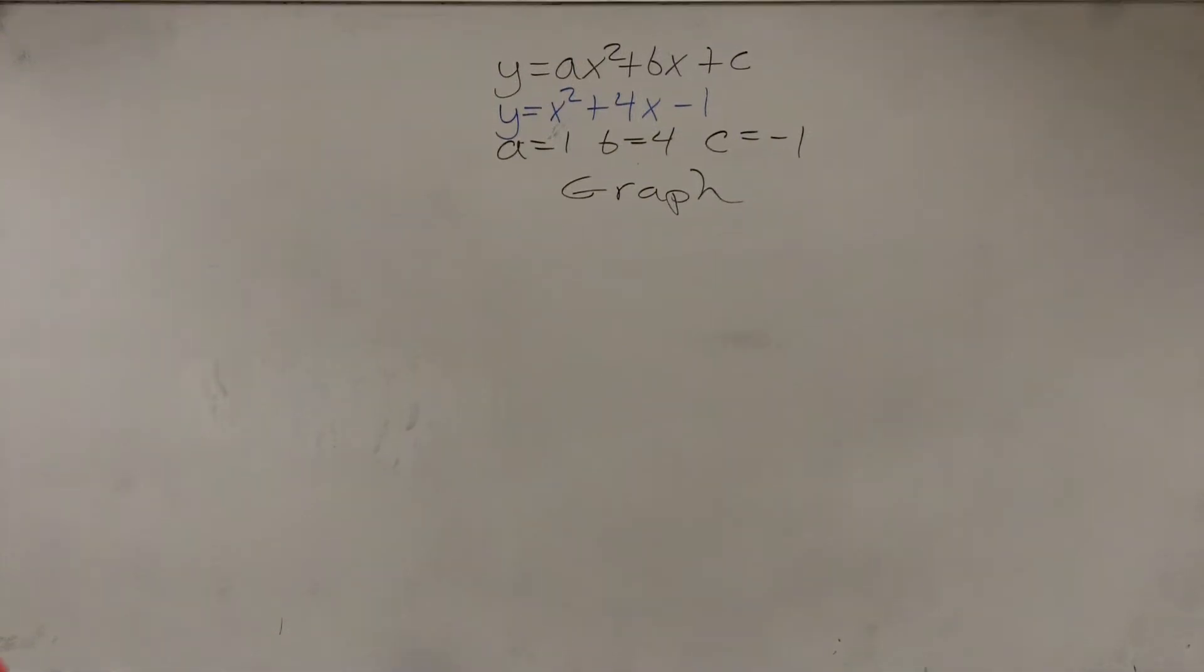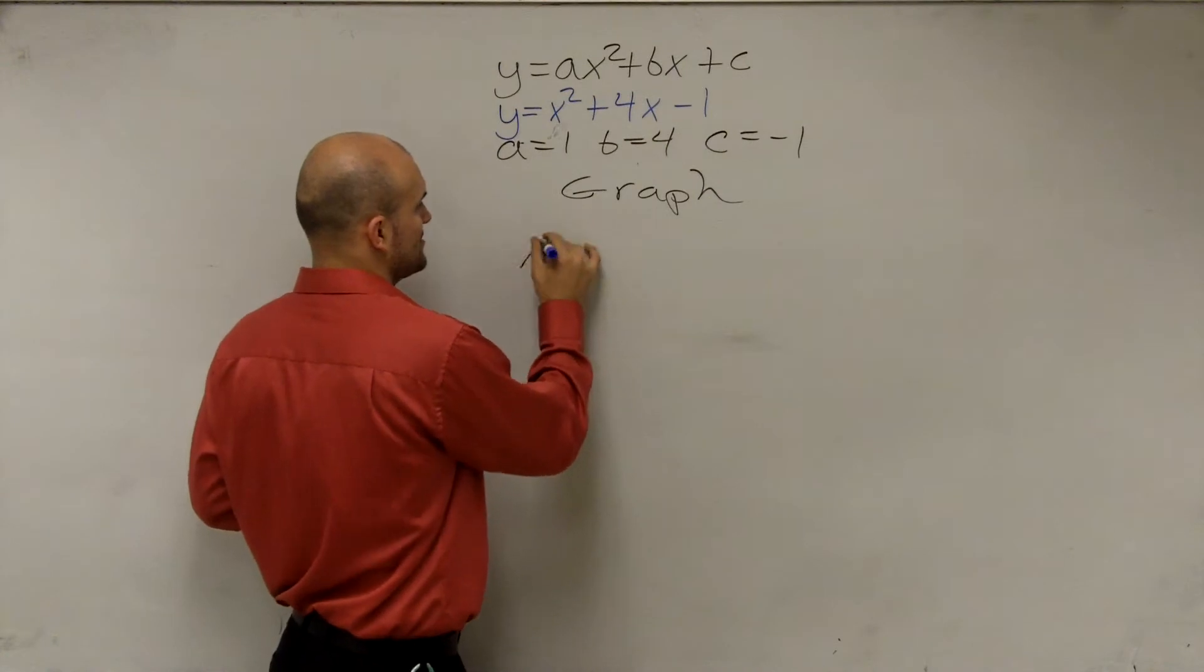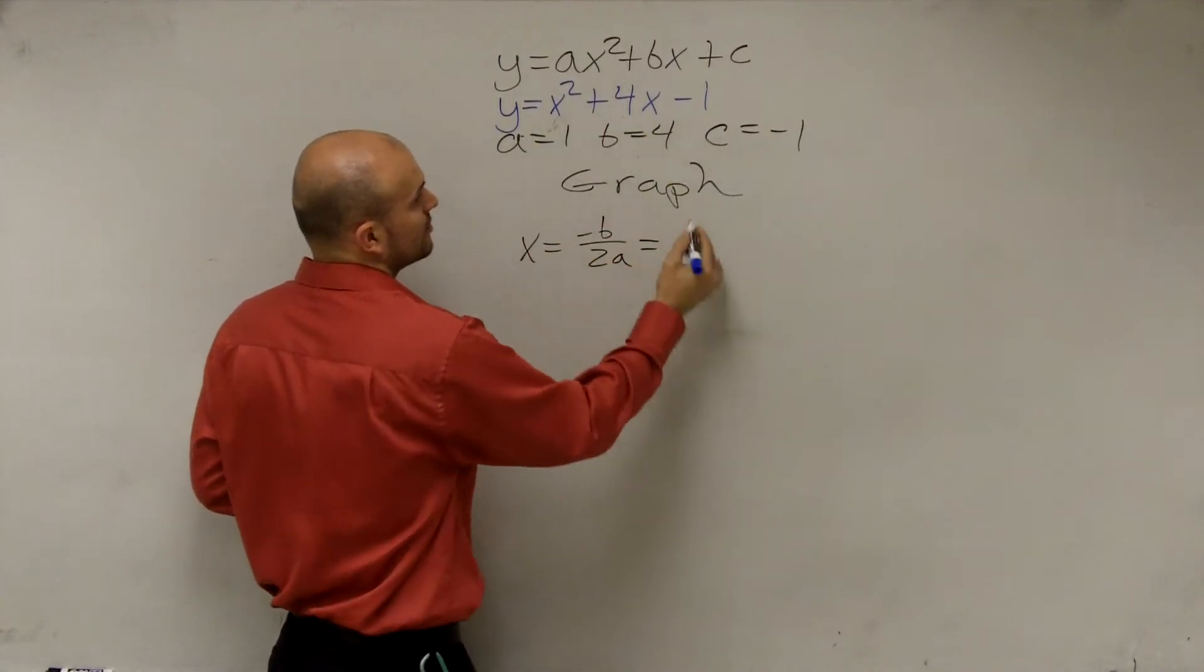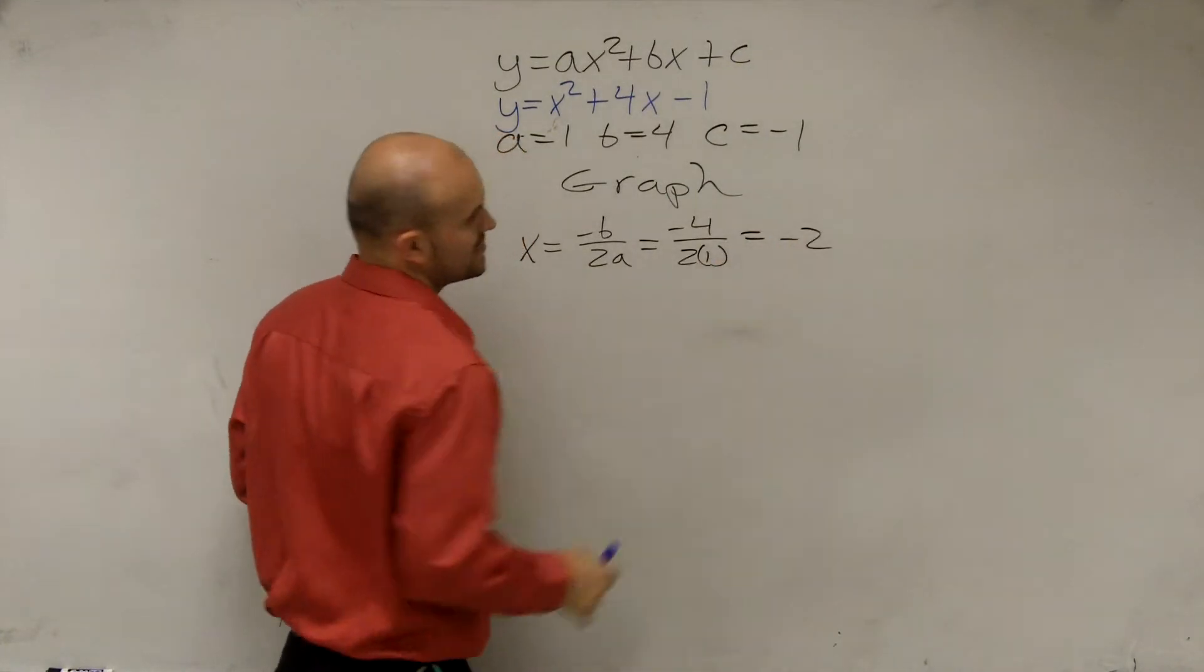The function. So remember, when graphing it, we go back to our axis of symmetry. And remember, our axis of symmetry, x equals opposite of b divided by 2a, which equals negative 4 over 2 times 1, which equals negative 2.